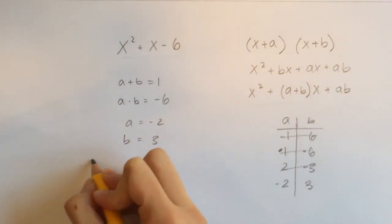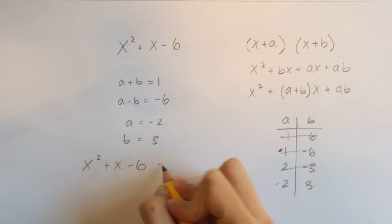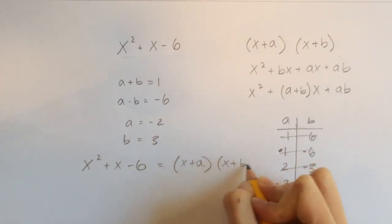So now, using this formula, we can say that x squared plus x minus 6 does indeed equal x plus a times x plus b. Now, we can plug in our a and our b.